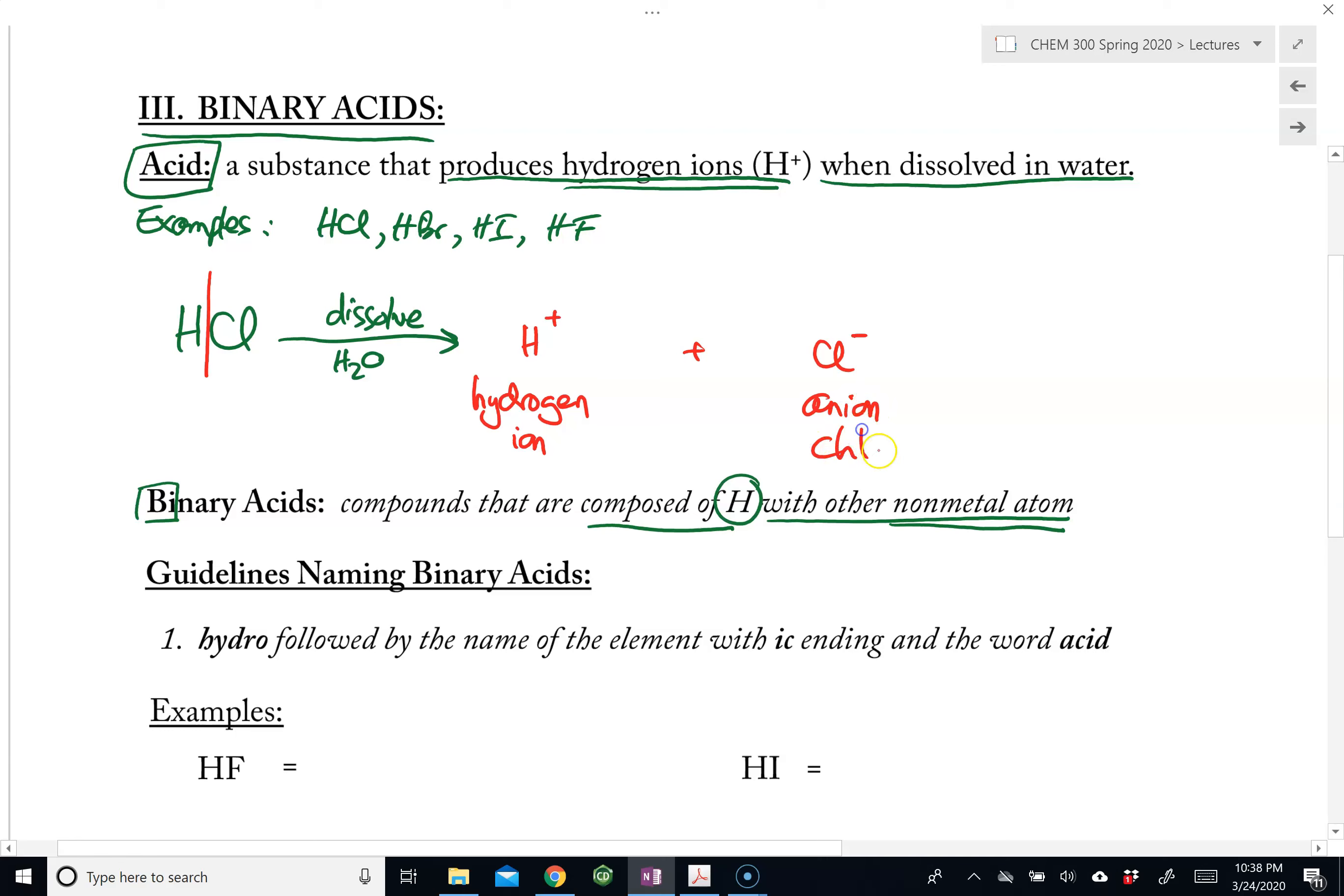The rest of this would then become the anion. In this case, to name this anion, it is the chloride. So that is the chemical property of a binary acid. When dissolved in water, it will dissociate to produce the hydrogen ion and the chloride anion.